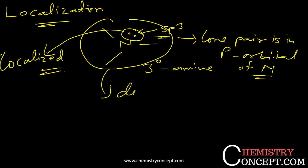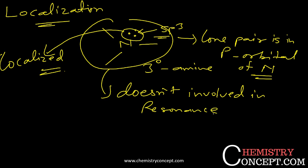So this molecule does not get involved in resonance. For localization, suppose we have any molecule and that lone pair is still on that molecule and that lone pair is available for donation — that kind of lone pair is known as a localized lone pair, and that electron is known as a localized electron. This is localization.